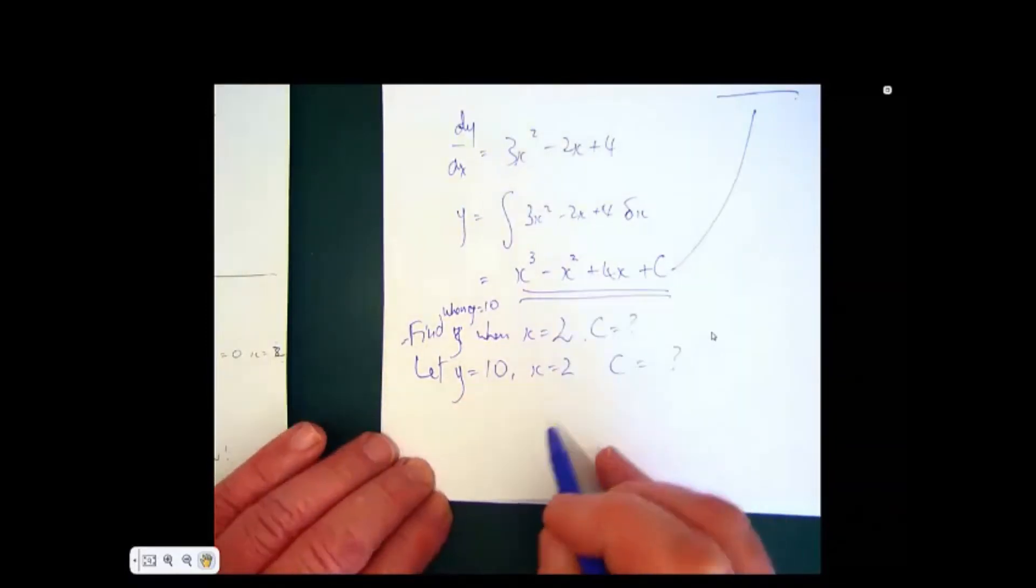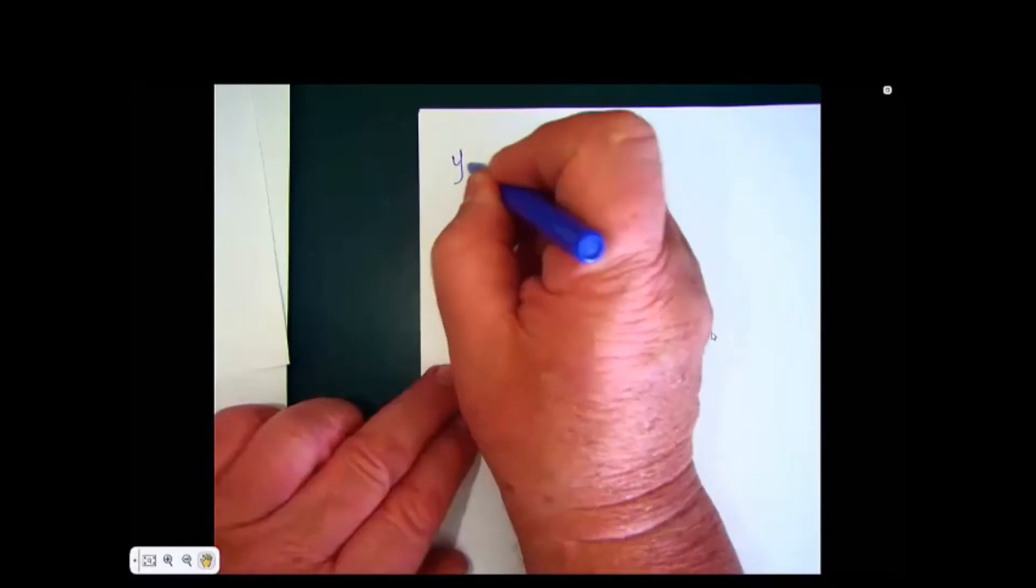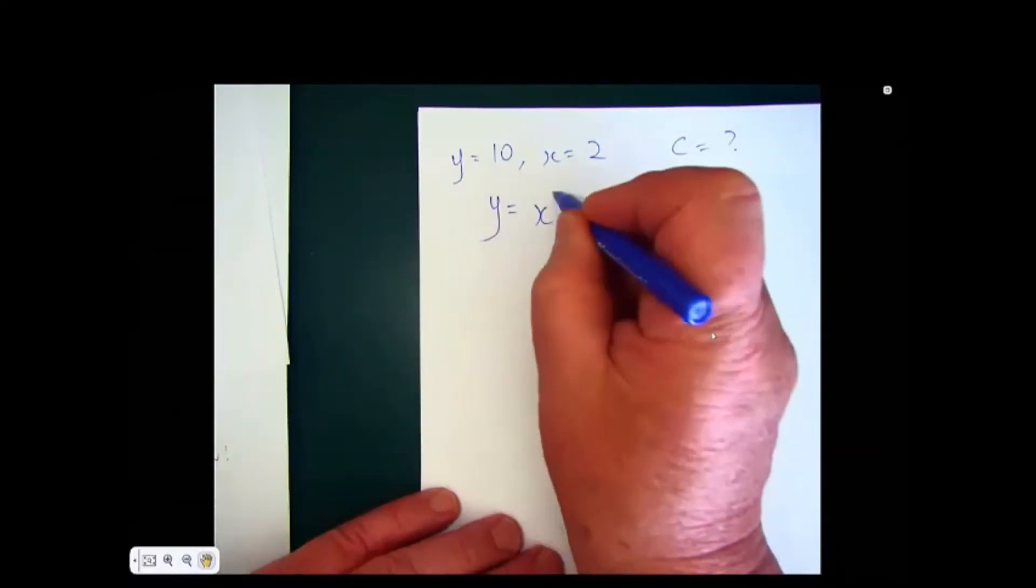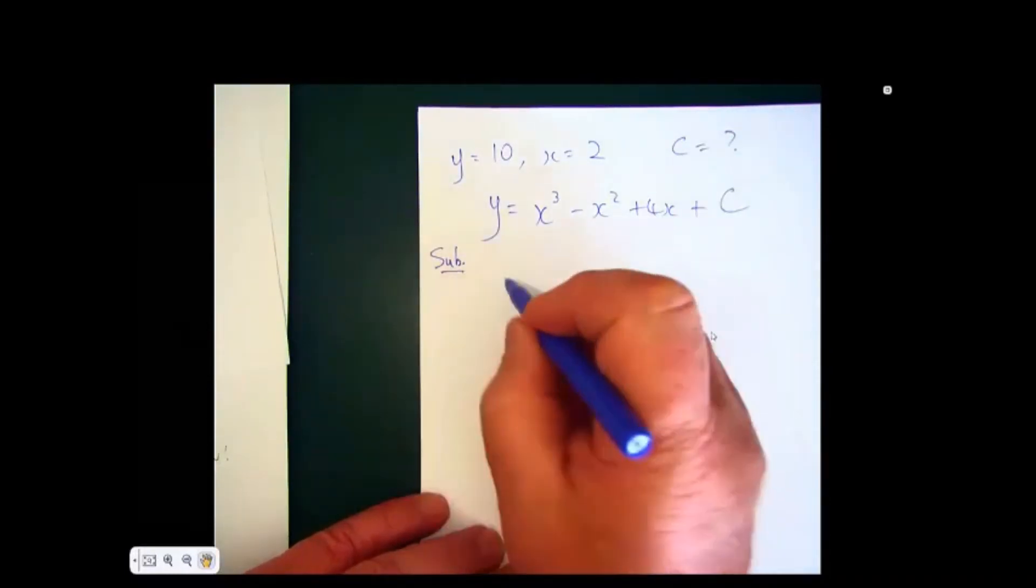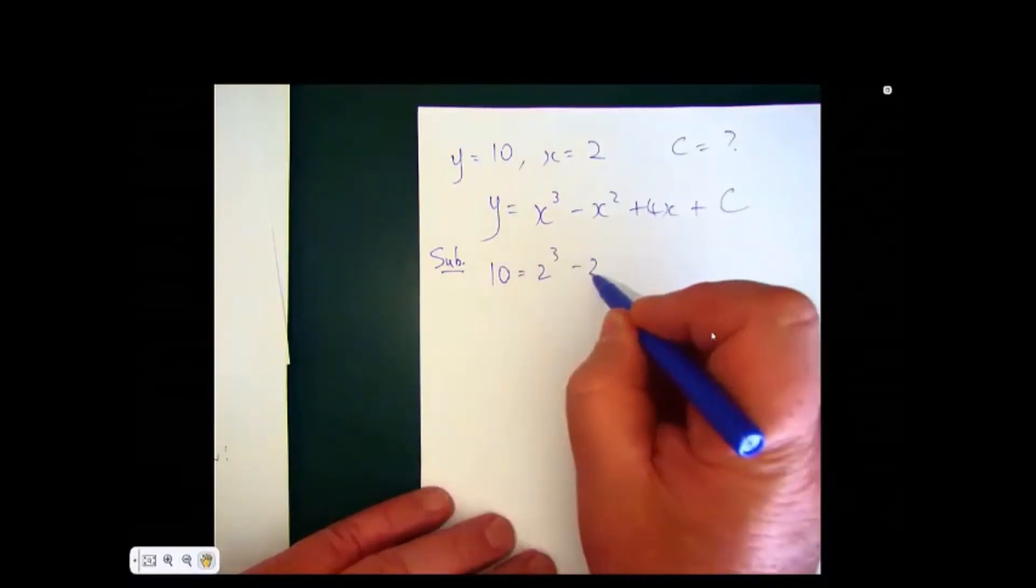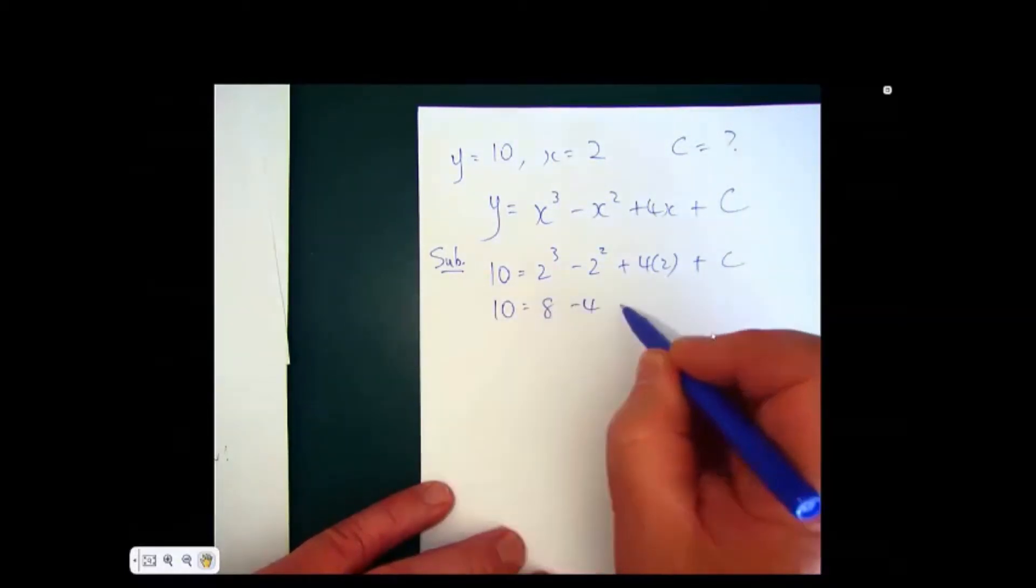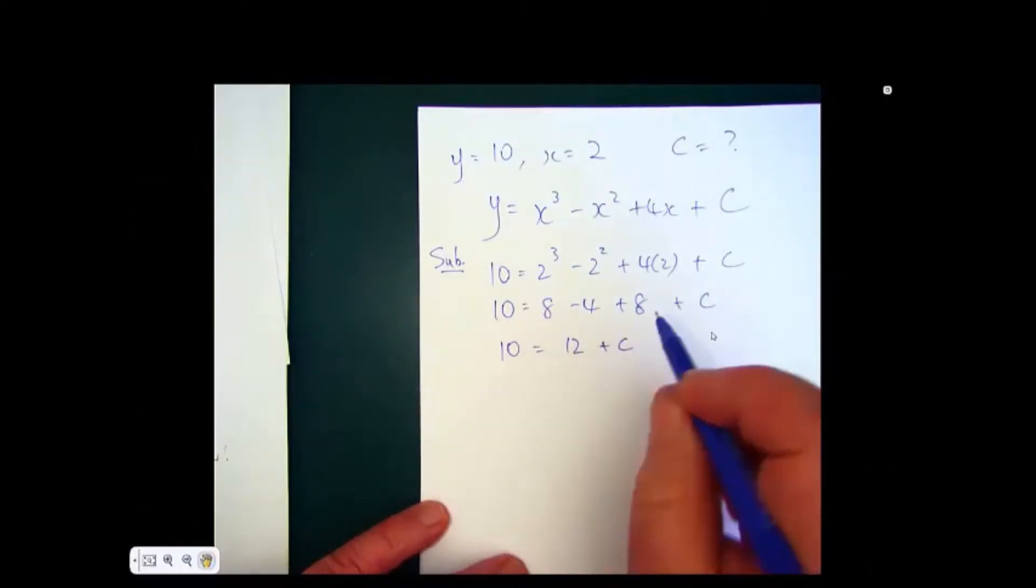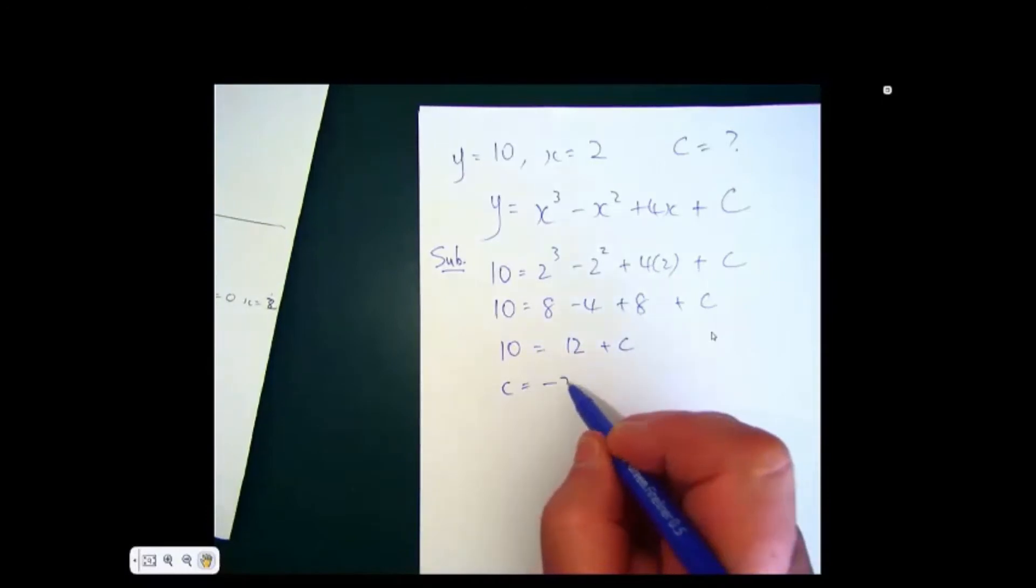We've got x cubed minus x squared plus 4x plus c. Now we substitute in, 10 equals 2 cubed minus 2 squared plus 4 by 2 plus c. We can work this out very carefully: 8 minus 4 plus 8 plus c. 16 minus 4 is 12, so we finally get 10 equals 12 plus c. Bringing this across, we will find that c must equal negative 2.